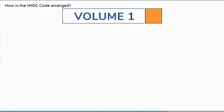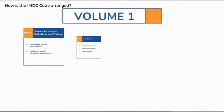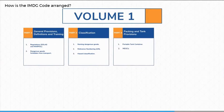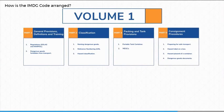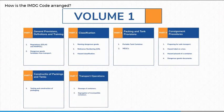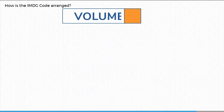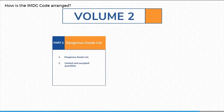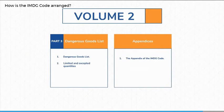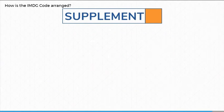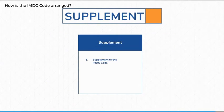Volume 1 contains parts 1, 2, 4, 5, 6, and 7, as well as the packing instructions. Volume 2 contains part 3 and the appendices. The supplement is contained within a separate volume.